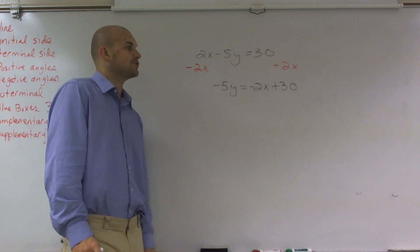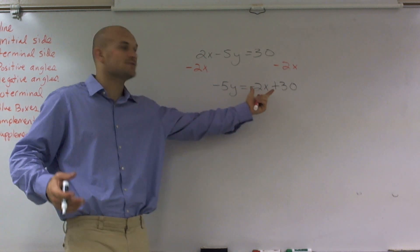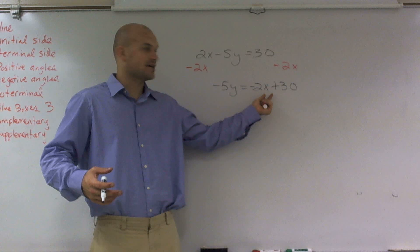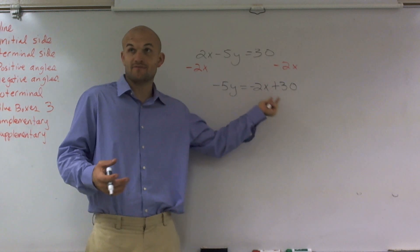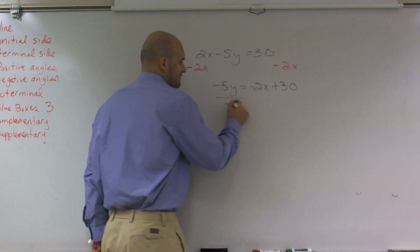Then now the next thing we need to do is get rid of our negative 5, which is in front. Now remember, guys, I told you addition and subtraction, you can't combine a number and a number with a variable, right? Because we don't know the value of x. So you can't combine them.